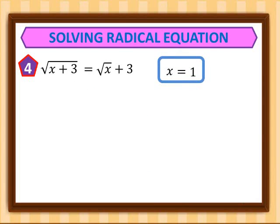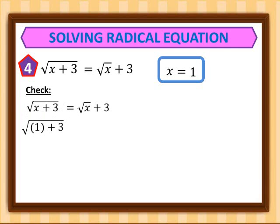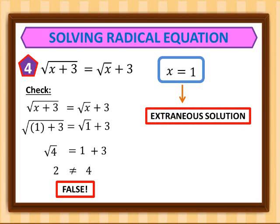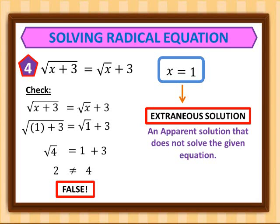We check if x equals 1 is really the solution by substituting into the original equation: square root of 1 plus 3 equals square root of 1 plus 3. The left side gives 1 plus 3 equals 4; the right side gives 1 plus 3 equals square root of 4, which is 2. Since 2 is not equal to 4, this is false. Therefore, x equals 1 is an extraneous solution — an apparent solution that does not solve the given equation.